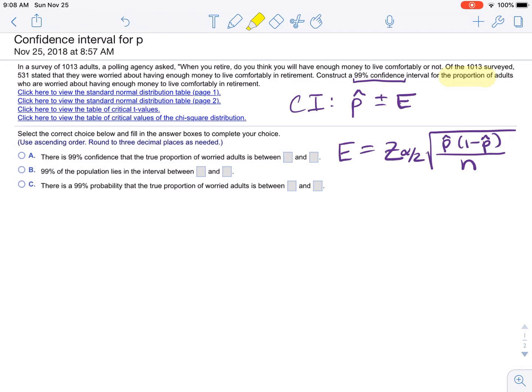So we use these formulas here. With the proportion, it's always the normal distribution that we're using because P-hat has a sampling distribution that is normally distributed.